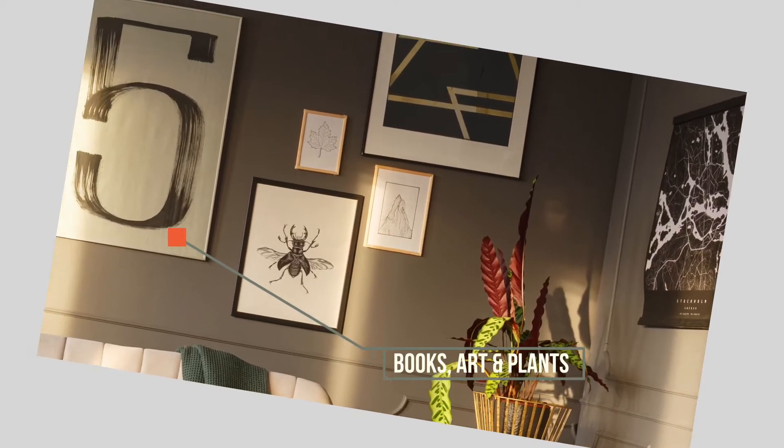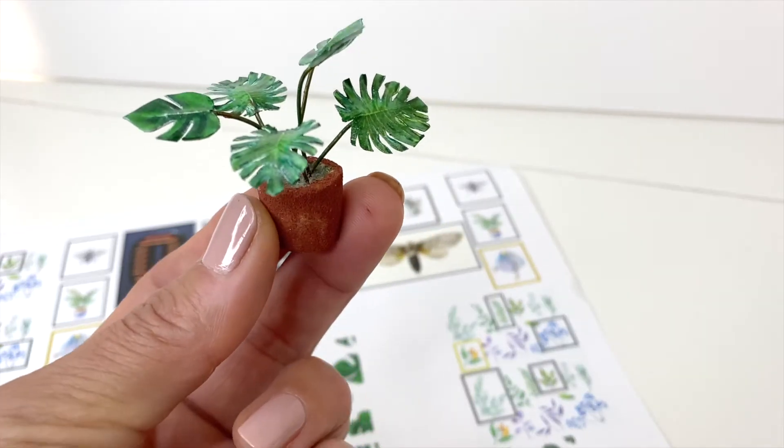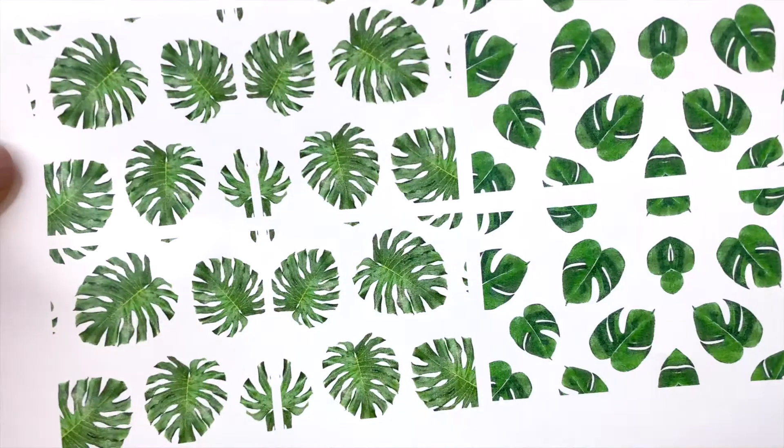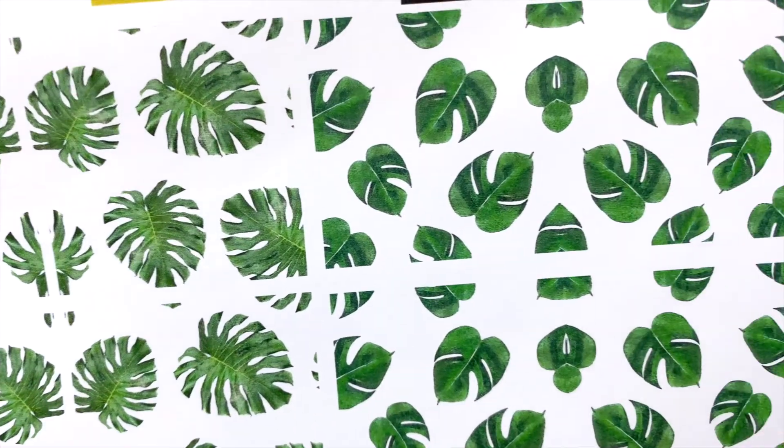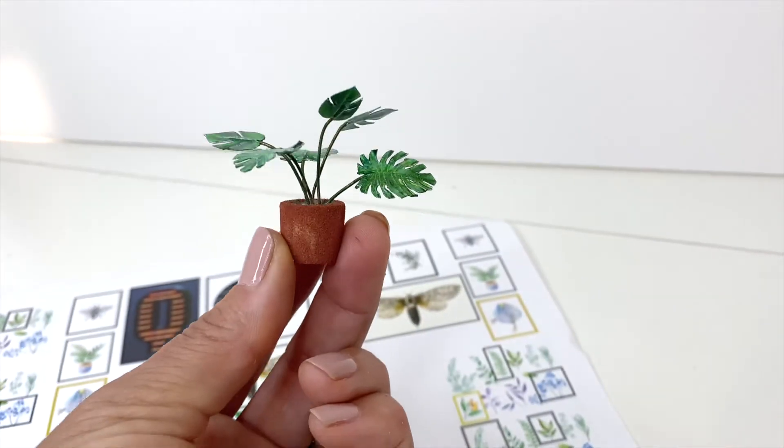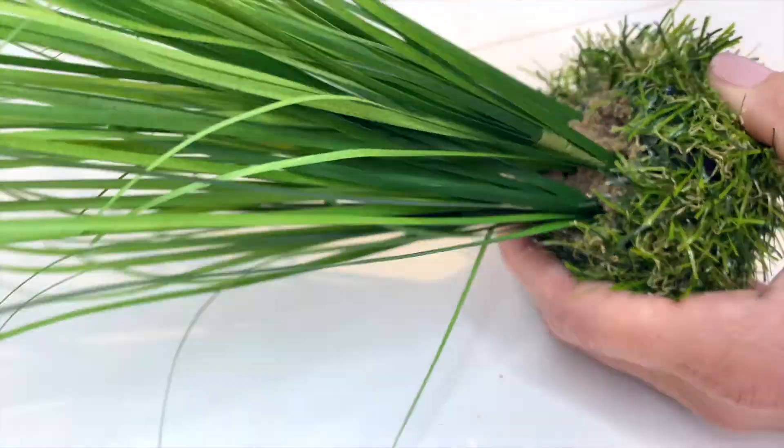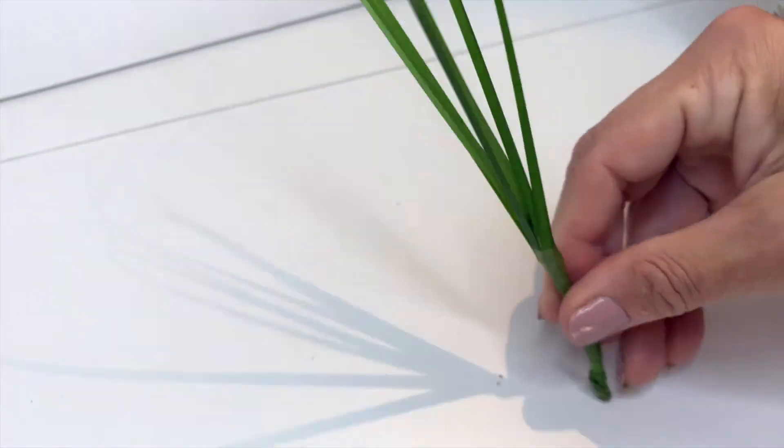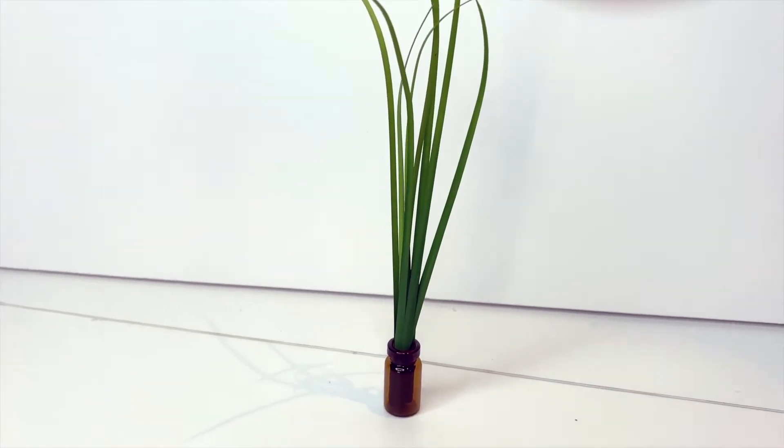Now we need some accessories and deco elements. This little guy is made of printed out leaves, which I glued together back to back with a piece of wire in between. The pot is made of modeling board. I made another plant from this long grass deco. I just ripped out a stem and placed it into a tiny glass vase. That's it. Very simple.